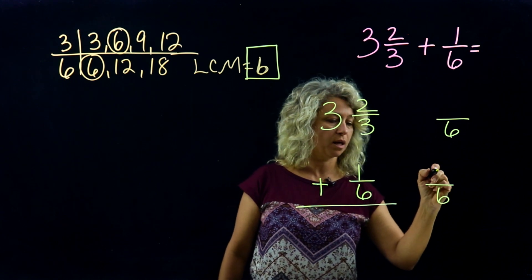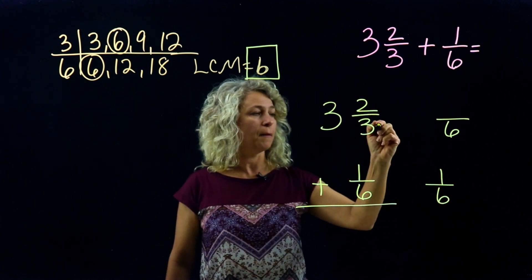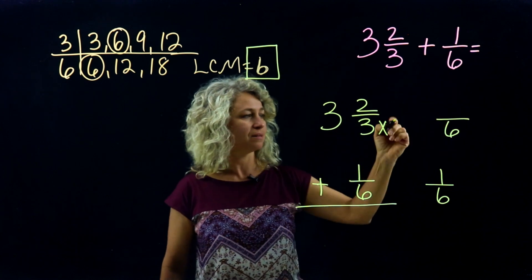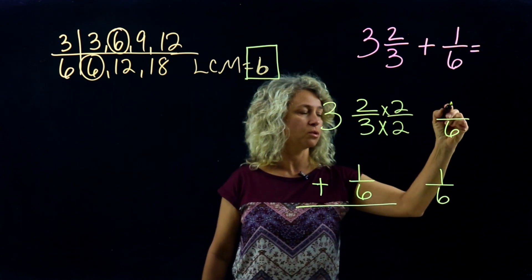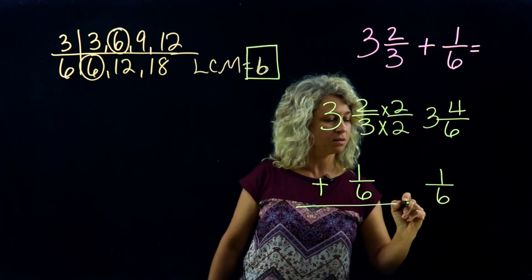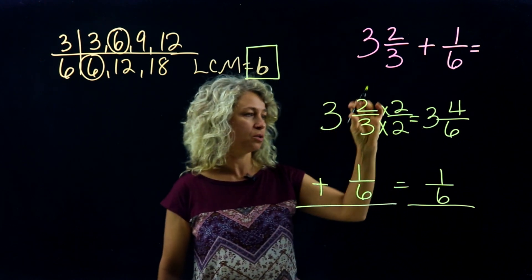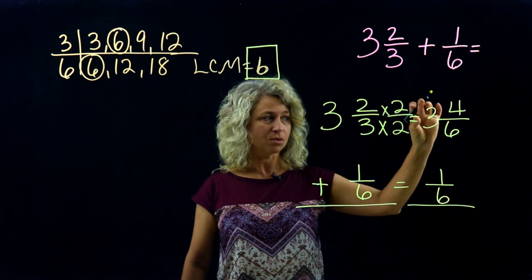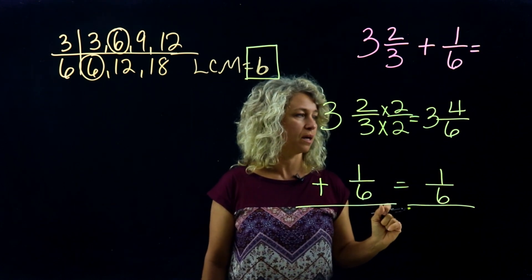How do you get from a 3 to a 6? Times 2, times 2. 2 times 2 is 4. Bring over the whole number. And now we know that 3 and 2/3 equals 3 and 4/6, and 1/6 just equals 1/6.